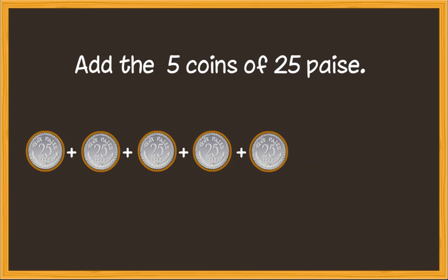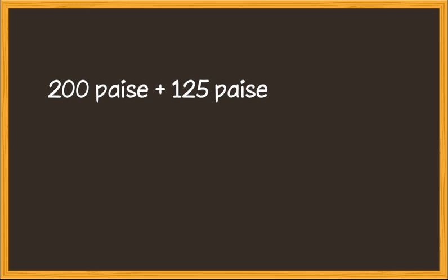Now add the five coins of 25 paise: 25 paise plus 25 paise plus 25 paise plus 25 paise plus 25 paise is equal to 125 paise. So five coins of 25 means 125 paise. So 200 paise and 125 paise is equal to 325 paise.